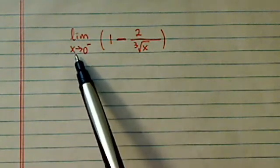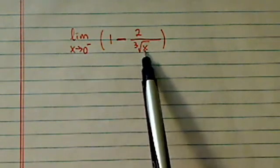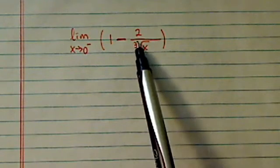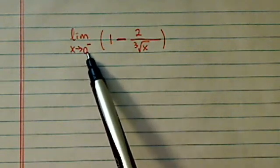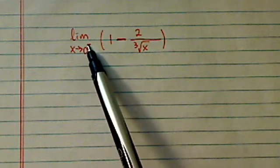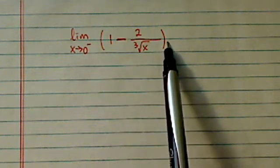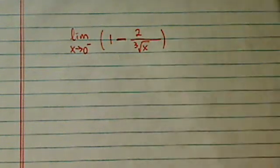does not exist because when x goes to 0 this bottom gets to be undefined. So the question is as x approaches from 0 on the left side does it go positive infinity or negative infinity?